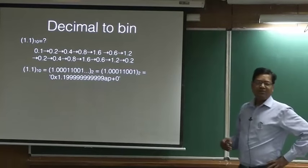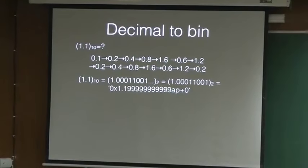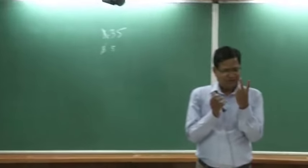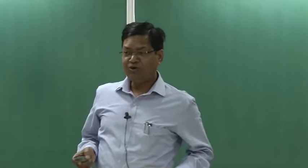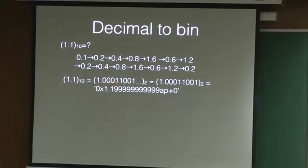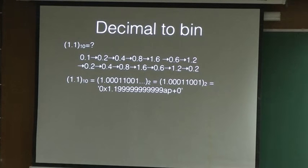It turns out it will not stop. That means 1.1 cannot be represented accurately in a computer. In decimal, 1.1 is possible to represent using 2 decimal digits, but not with a binary computer. It is a recurring digit - this will recur. After 0.2 it will recur. It is recurring and cannot be represented accurately in the computer. These are problems - this is called round-off error. The computer has rounded off the number 1.1, which I thought could be represented accurately inside the computer. It cannot. 1 by 3 of course we cannot represent accurately in decimal itself, and the same thing happens for binary.